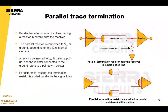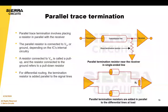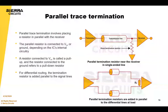The other option is parallel trace impedance, where a shunt resistor is added in parallel with the receiver. The shunt resistor connected to the power supply is called a pull-up resistor, while the resistor connected to the ground is a pull-down resistor. In differential routing, termination resistors are incorporated in parallel to the lines.